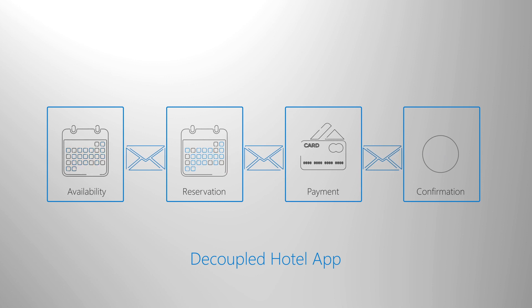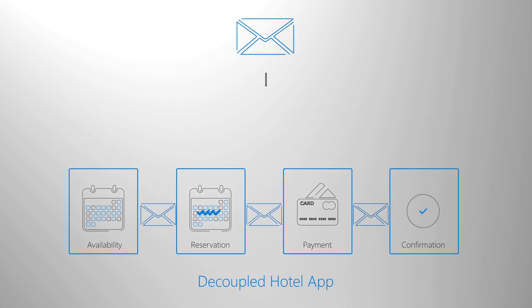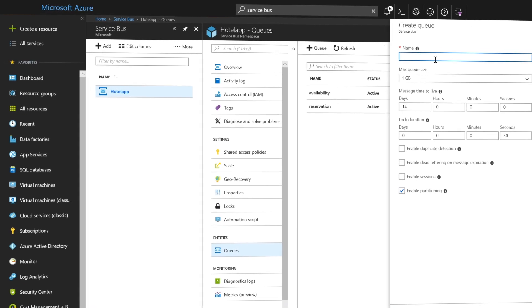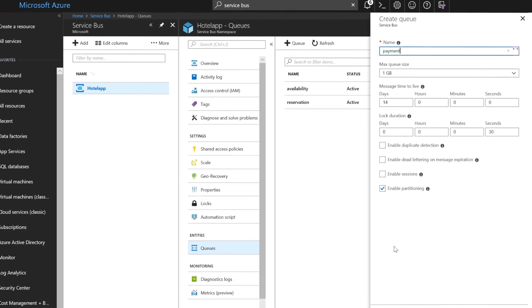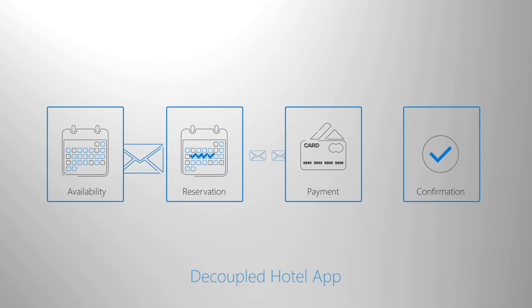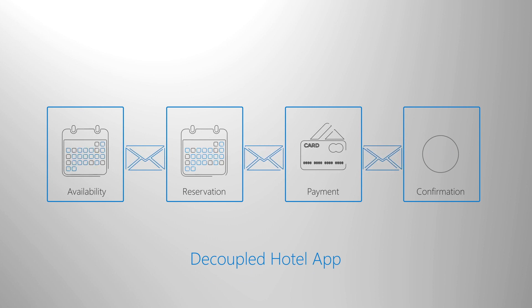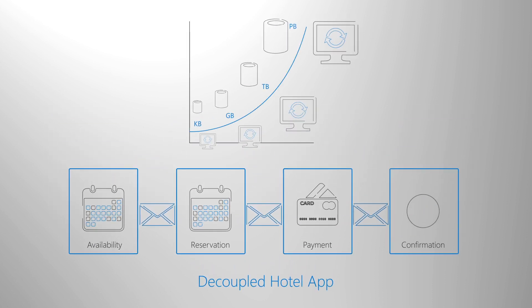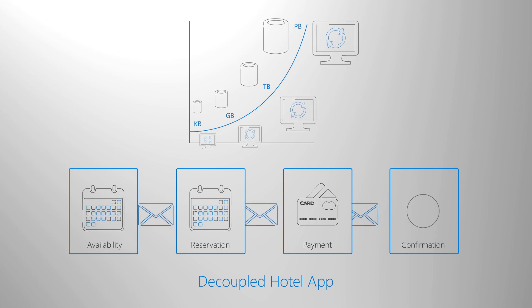Data is transferred between different applications and services using messages, which in binary format can contain JSON, XML, or just text. You can use Service Bus to transfer critical business data such as financial transactions, sales, or inventory movements. You can also use Service Bus to improve the reliability and scalability of applications and services by decoupling applications, enable one-to-many relationships between publishers and subscribers using topics and subscriptions, and implement workflows.